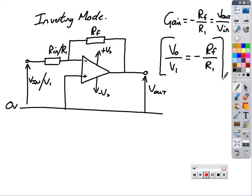If you rearrange that, and you want to know your output, you can rearrange that to say V out equals V1 times, or negative V1 times RF over R1, where RF over R1 is your gain.